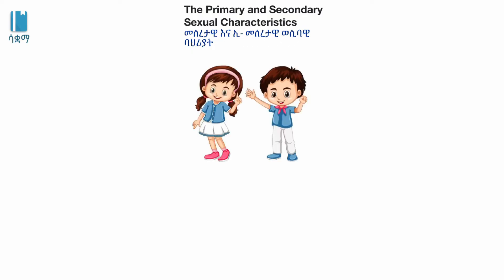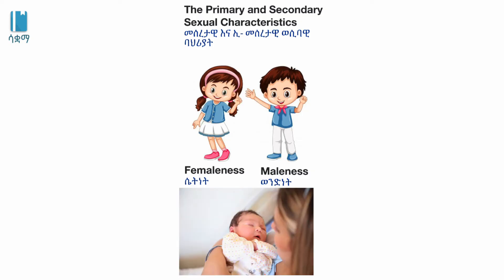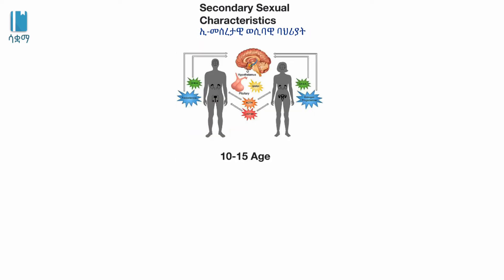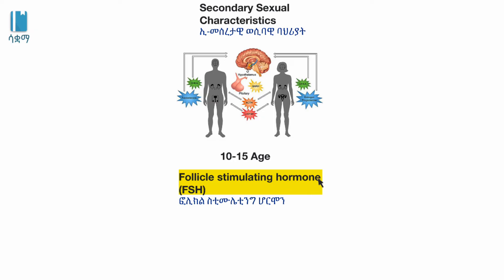Primary and secondary sexual characteristics. The physical characteristics are the sexual characteristics of the body. Secondary sexual characteristics develop during puberty. During puberty, the testes and ovaries stimulate hormones.